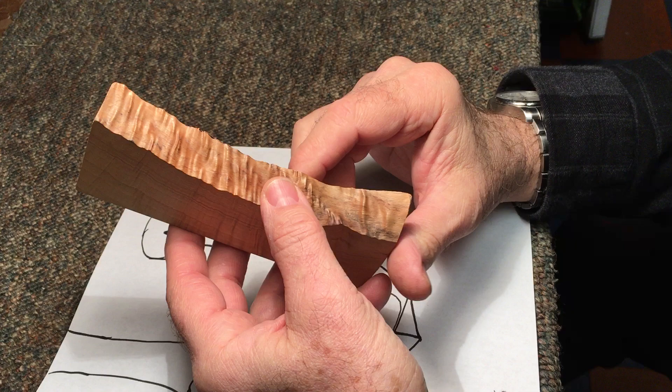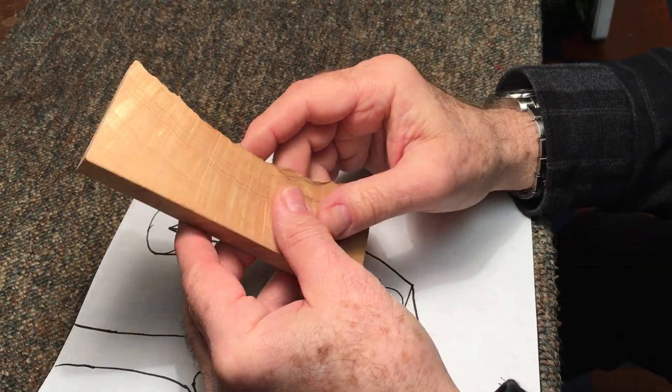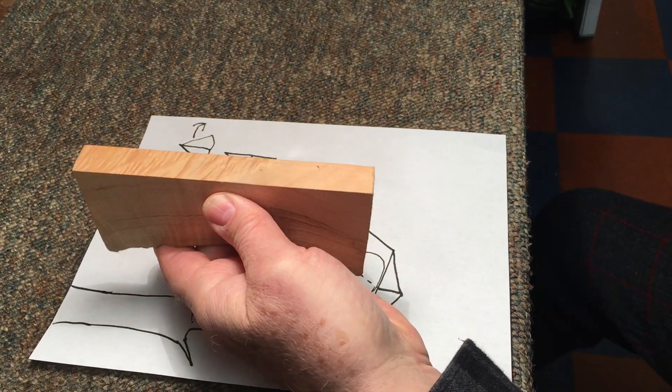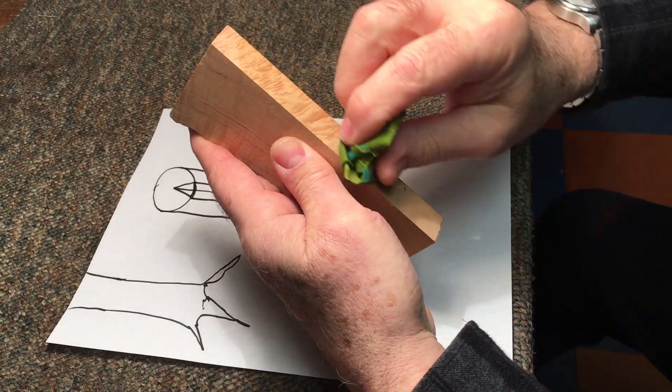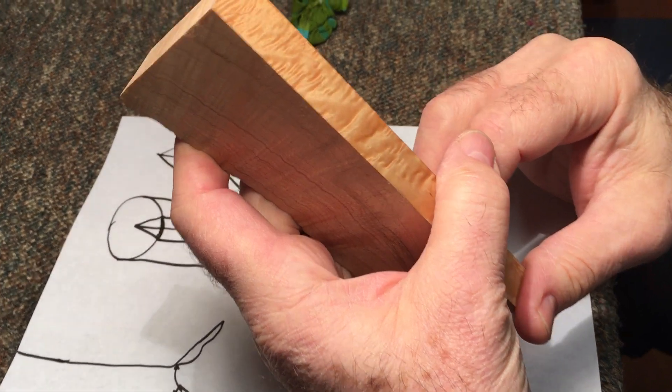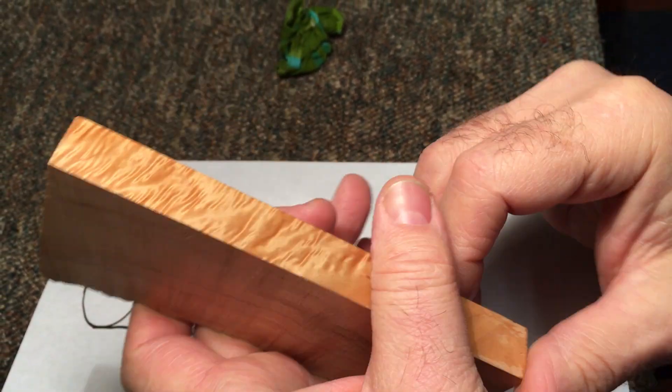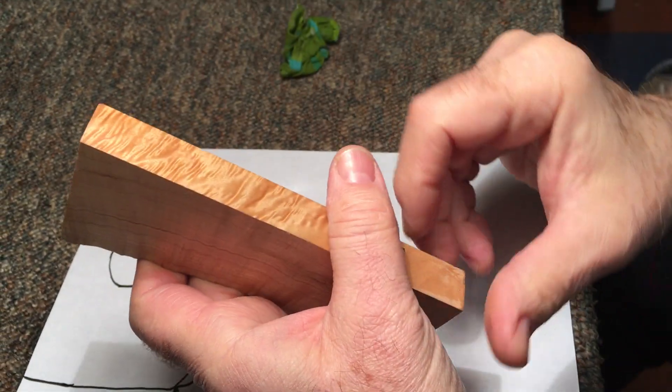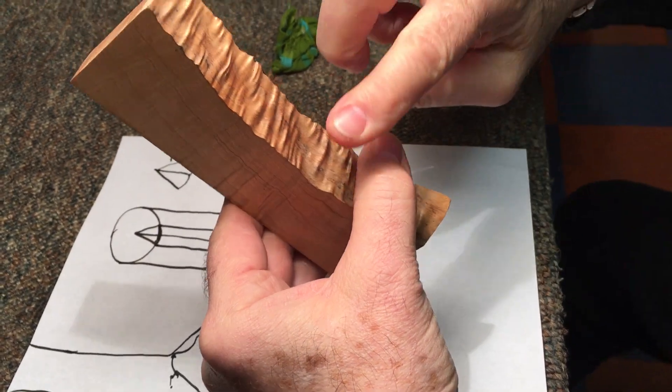And it also has this very beautiful flame, which people often ask about. There you can see the flame, and if I wet it, which is what the effect of varnishing does, you can really see it pop out. So where does that undulation come from? It comes from the grain itself.